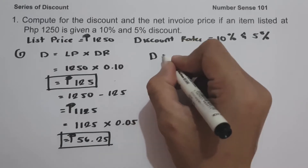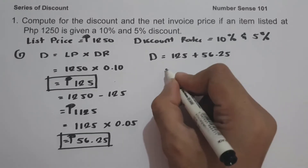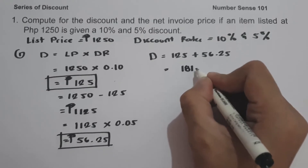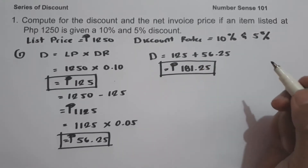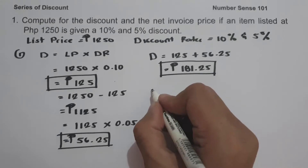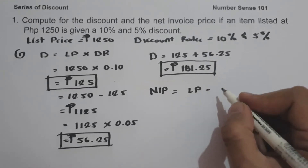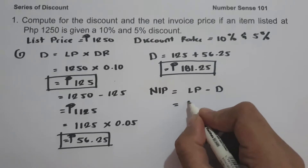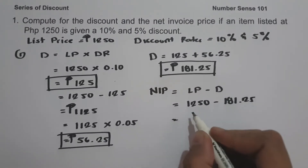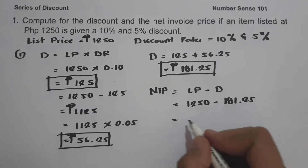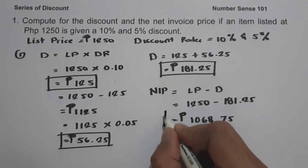To determine the total discount, we have 125 plus 56.25, which gives us 181.25 pesos. To determine the net invoice price (NIP), NIP equals list price minus discount, so we have 1,250 minus 181.25, which equals 1,068.75 pesos. That is our NIP for the first solution.